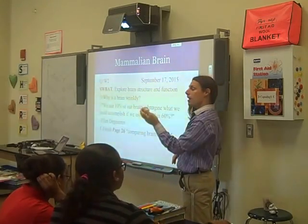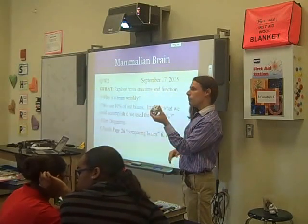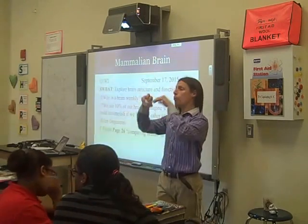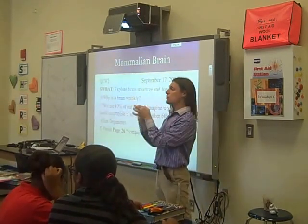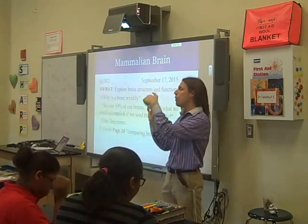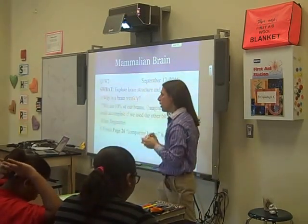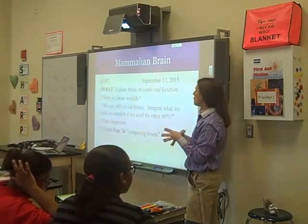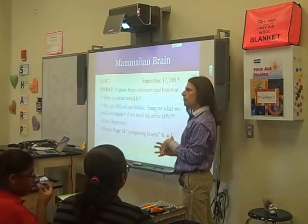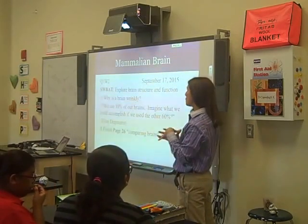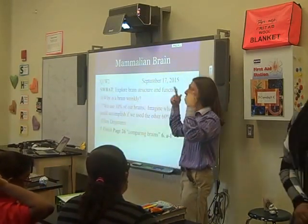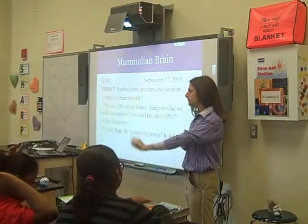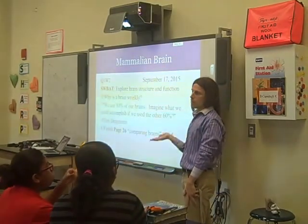The brain is wrinkly like the paper is wrinkly, but all the wrinkles hold information. So all these folds increase the surface area of the brain, so there's more space to put information. What would we expect of a less intelligent animal — a reptile, for example? Would we expect a brain as textured as ours? Less texture. Please open your book to page 25.